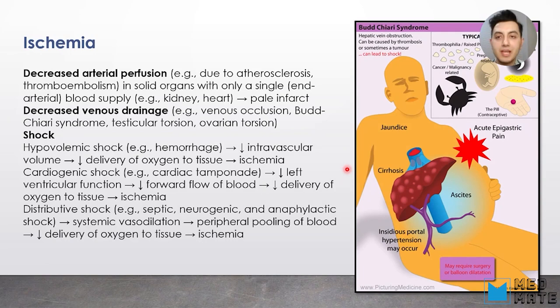Ischemia can be due to two reasons: decreased arterial perfusion or decreased venous drainage. Decreased arterial perfusion can be due to atherosclerosis or thromboembolism. In solid organs such as kidneys or heart, when there is only a single blood supply, they are very prone to decreased arterial perfusion and ischemia. That leads to pale infarct in this tissue if there is any sort of ischemia.